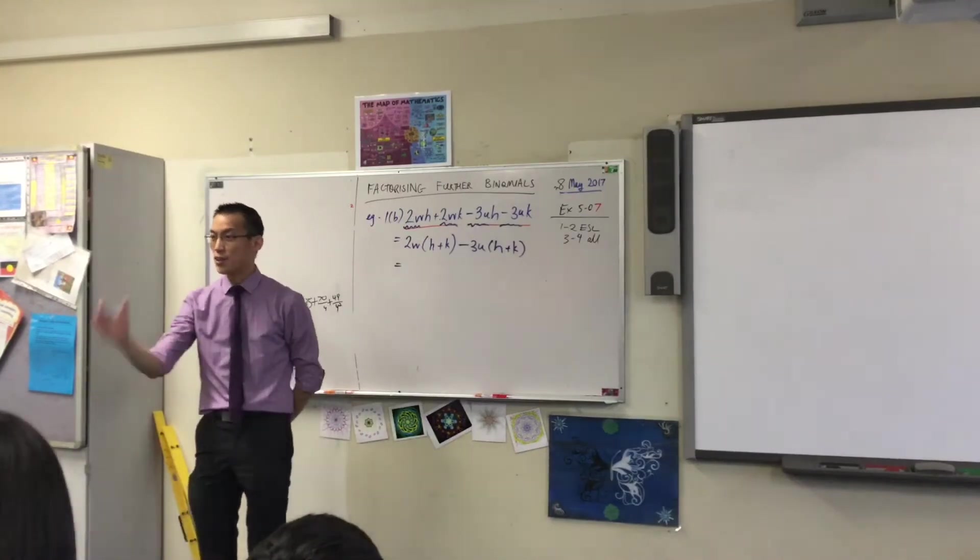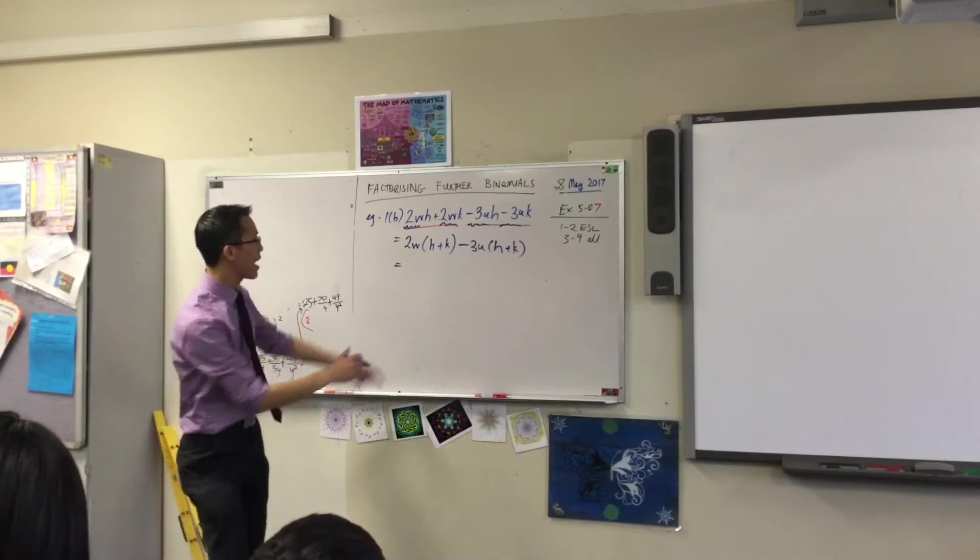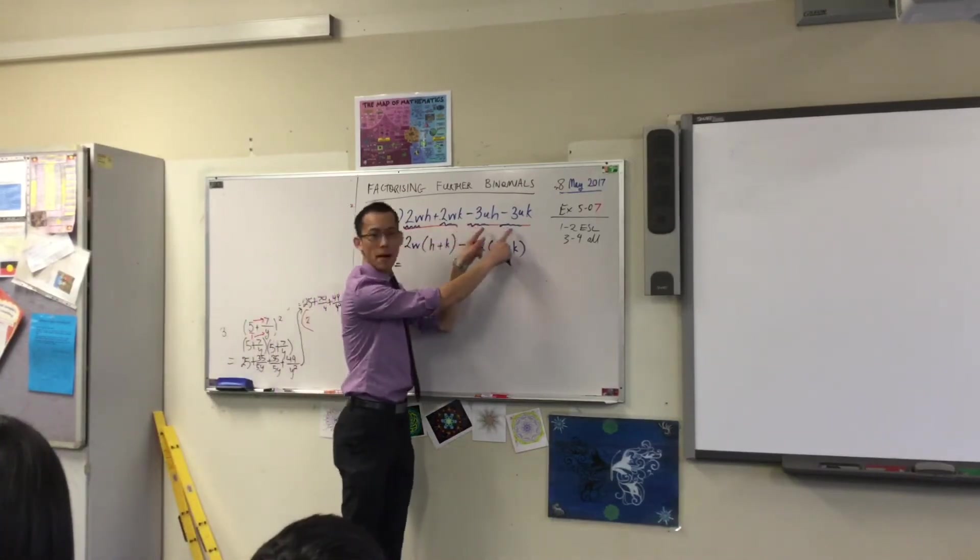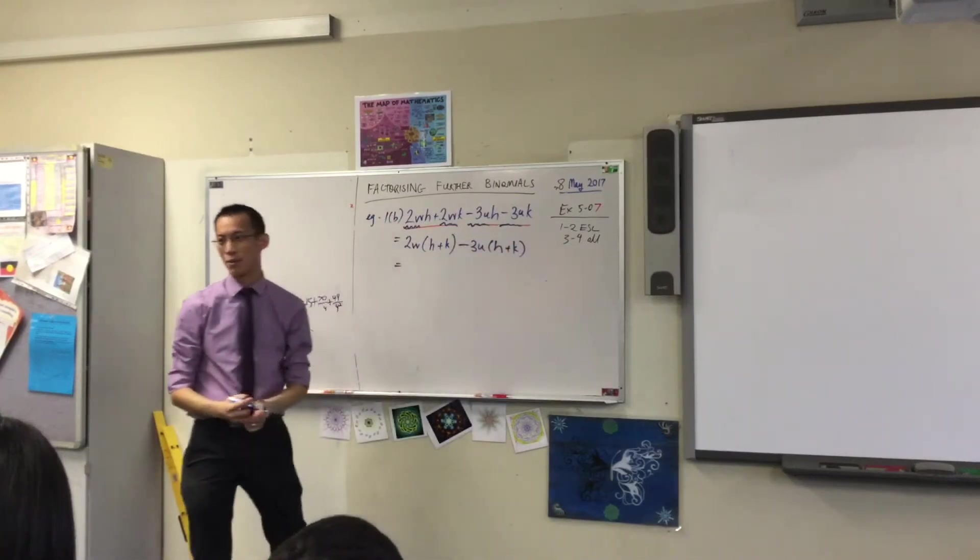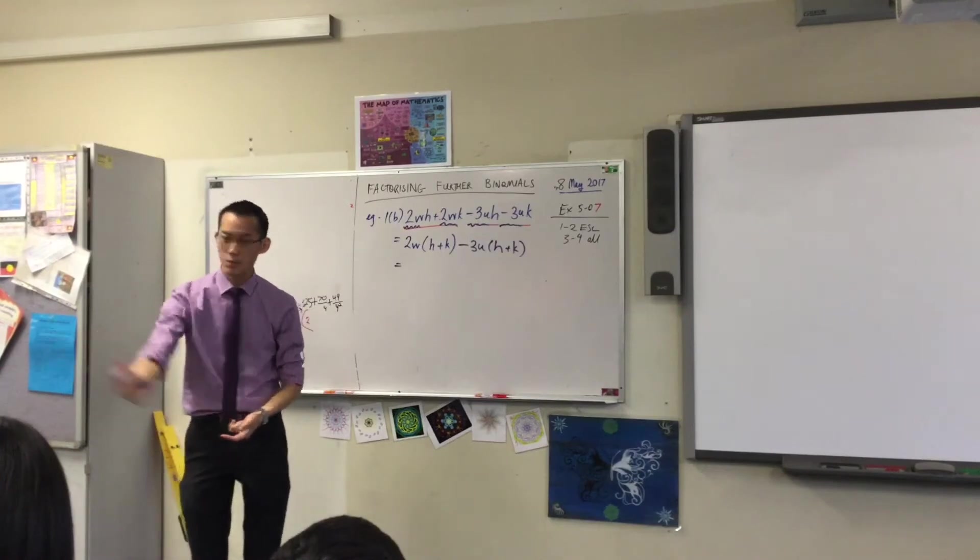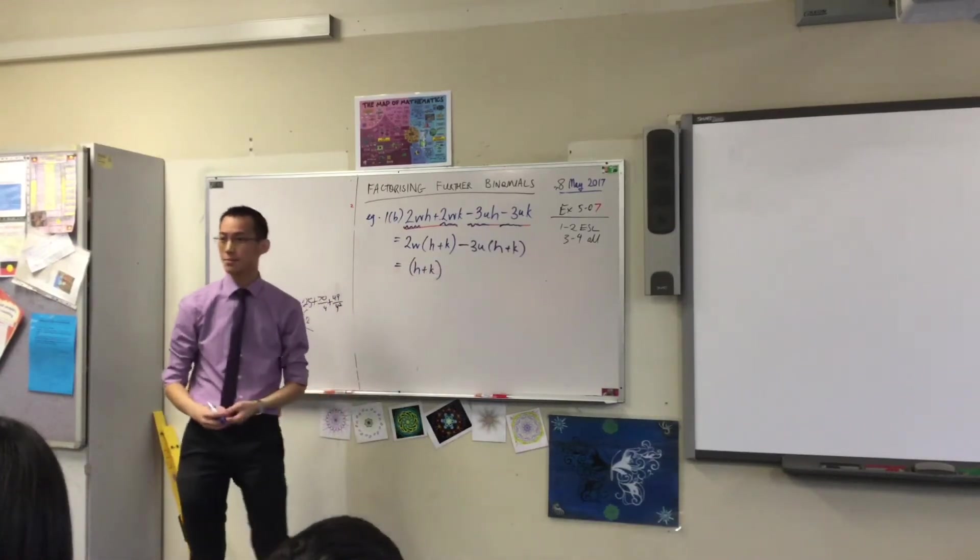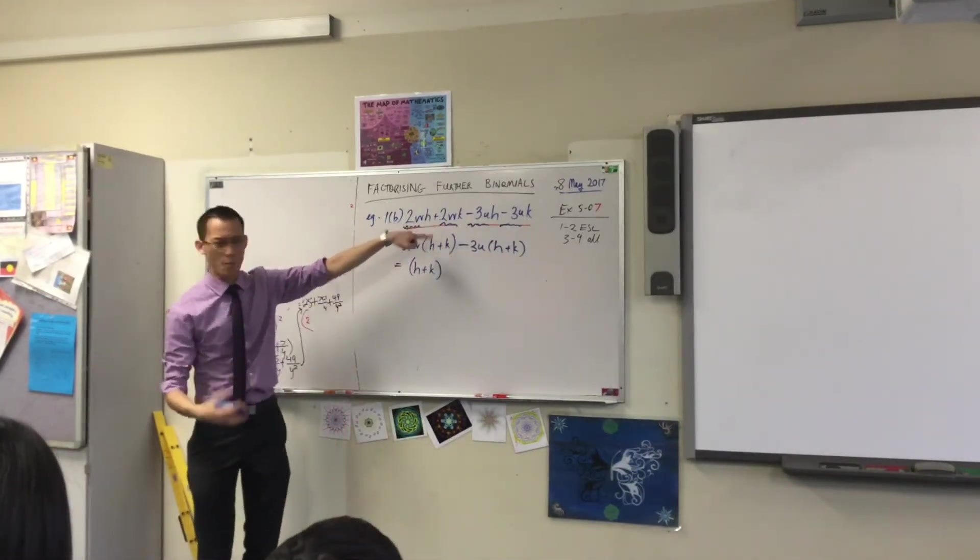Now here's the thing. You've done one step of factorization, but there's more to go. Remember how we said these both have a two W on them, these both have a minus three U on them. These both also have something in common, namely H plus K. So I'm going to take that out as well.